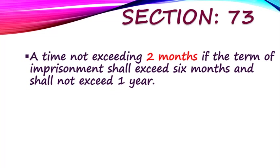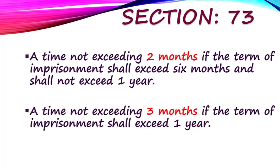If the term of imprisonment exceeds 6 months but does not exceed 1 year, then the maximum solitary confinement that can be ordered is 2 months. And if the term of imprisonment exceeds 1 year, the maximum solitary confinement that can be ordered is 3 months. So in any case, solitary confinement shall not exceed 3 months under Section 73. This concludes all the punishment-related provisions in Chapter 3.